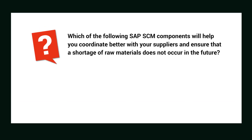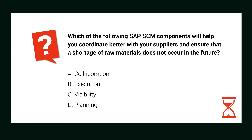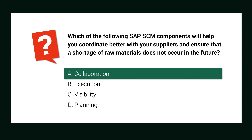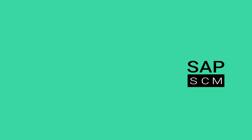Before you wrap up, see if you can try to answer this question based on what you've learned so far. If you thought collaboration was the correct answer, you are right. The collaboration component helps in coordinating different business components, both upstream and downstream of a supply chain network.